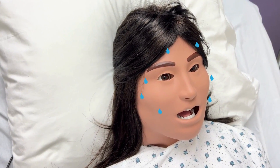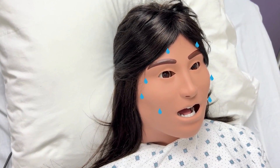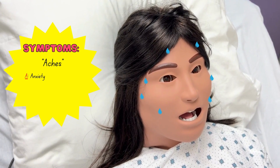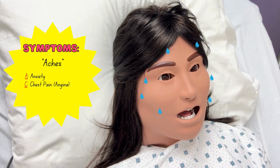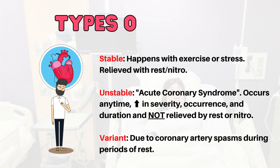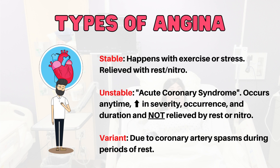So let's talk about some symptoms you would see on your patient. Just remember the word ACHES: A for anxiety and C for chest pain. Chest pain, otherwise known as angina, has different types. There's stable, which happens with exercise or stress and is usually relieved with nitroglycerin or rest, versus unstable, which is also called acute coronary syndrome.